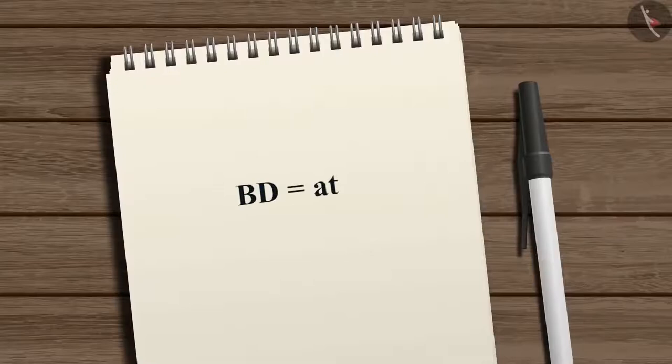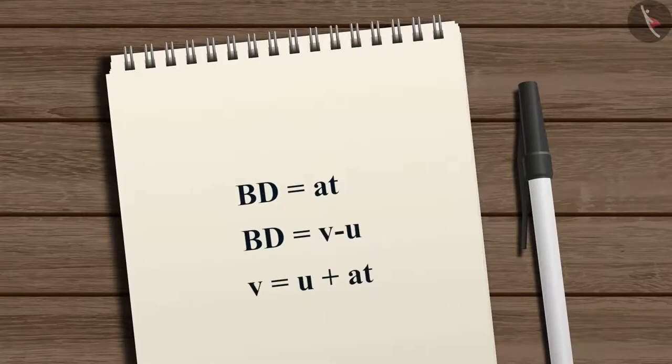Substituting the value of BD = at into v = BD + u, we get v = u + at. This completes the derivation of the first equation.